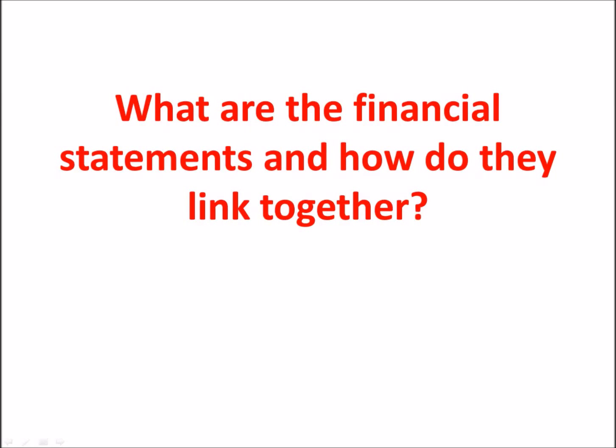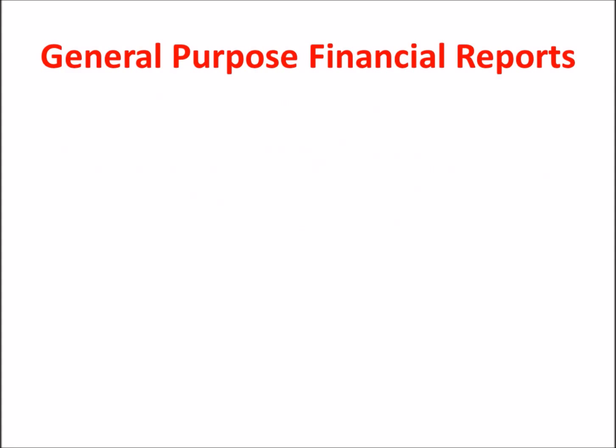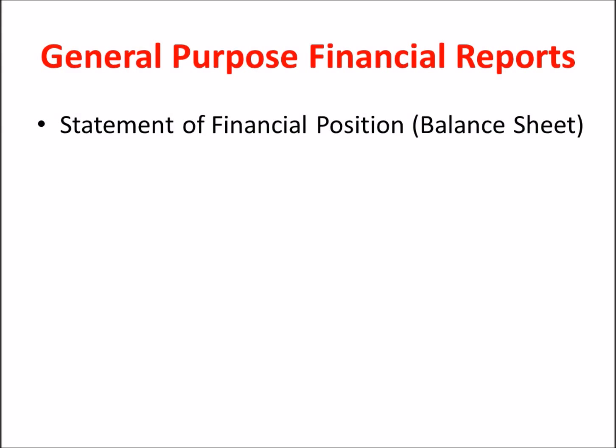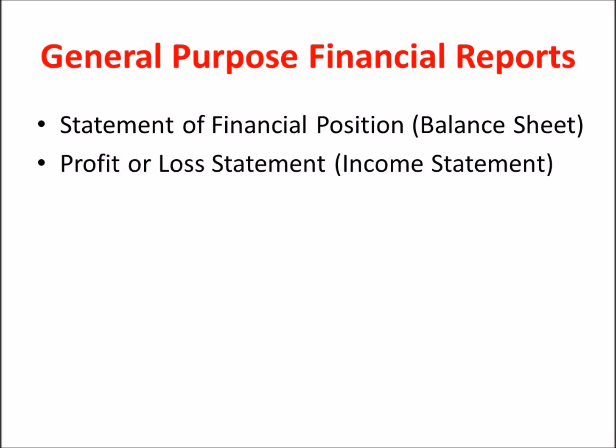This recording will demonstrate the main items in financial statements, the structure of financial statements, and how the statements are related to each other. General purpose financial reports are made up of four separate statements: the statement of financial position, commonly referred to as the balance sheet; the profit and loss statement, also commonly referred to as the income statement; the statement of changes in equity; and the cash flow statement.